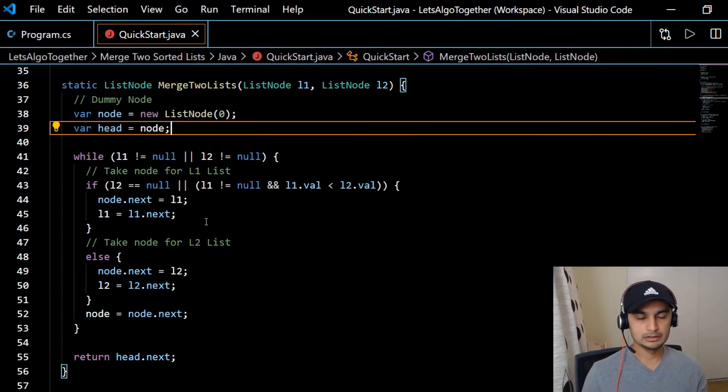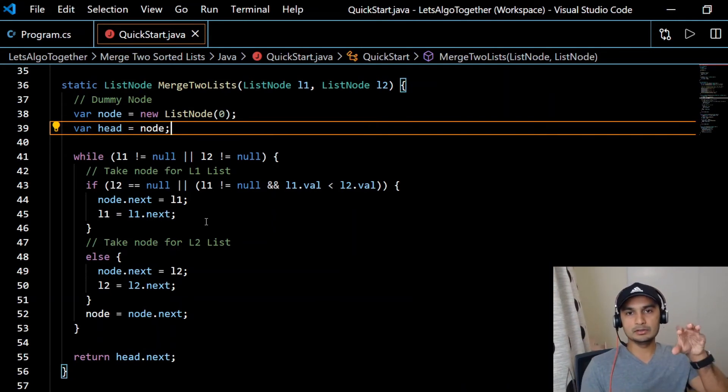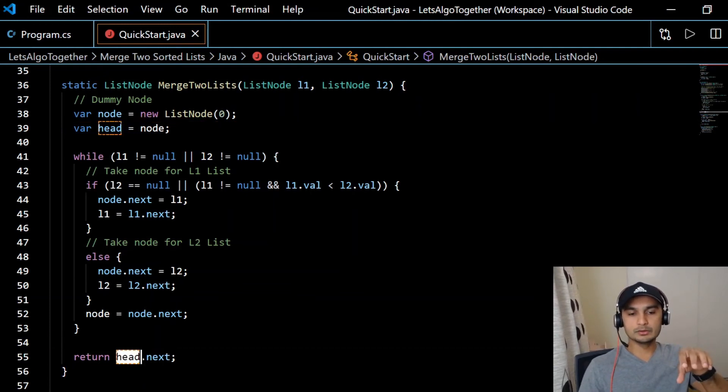We are pointing head to it. So what will happen is we'll have a dummy node and then the merged list would be after that. So once the while loop is done, what we do is we return head.next, so that's our start of the merged list. There you go, that's the complete gist of it, pretty simple.